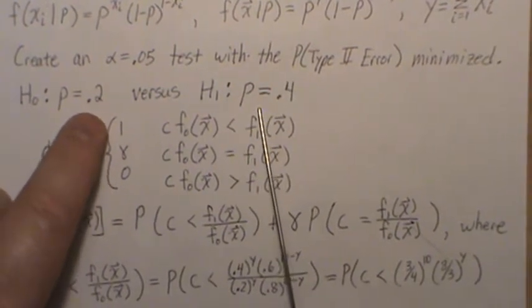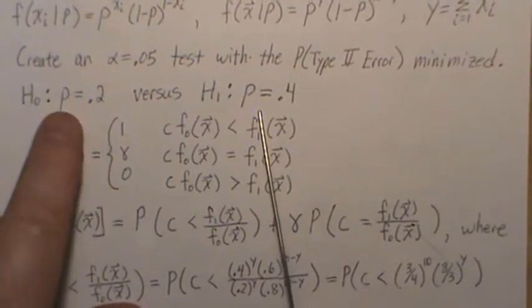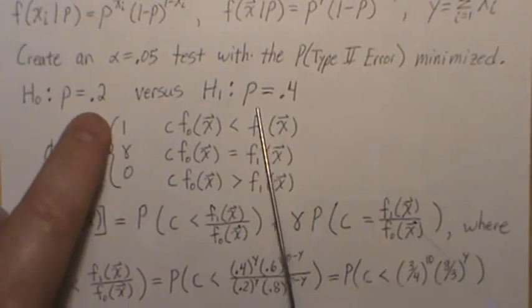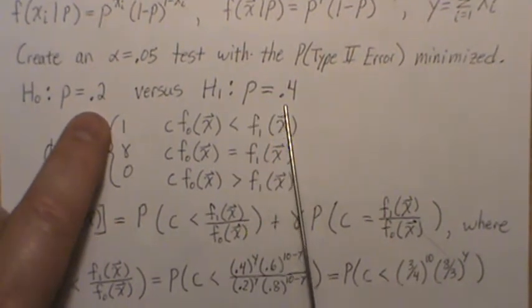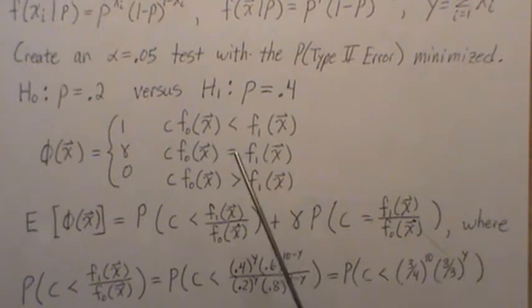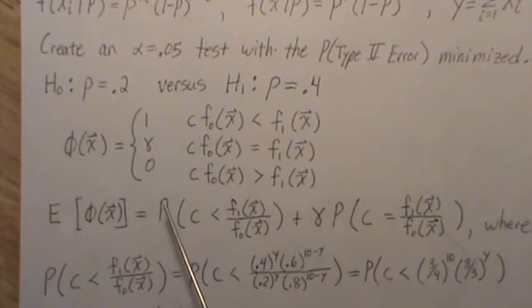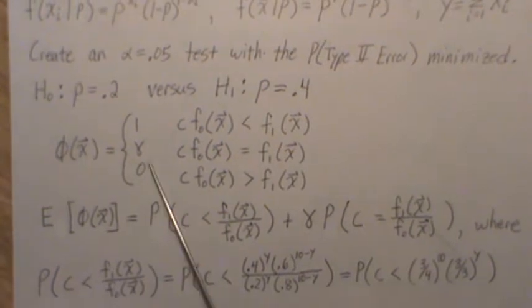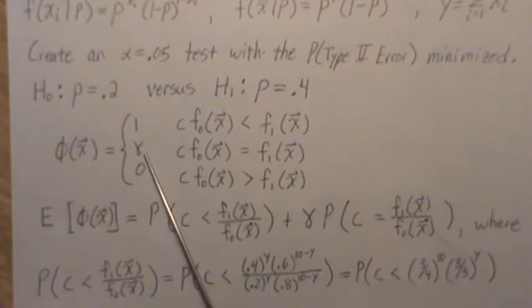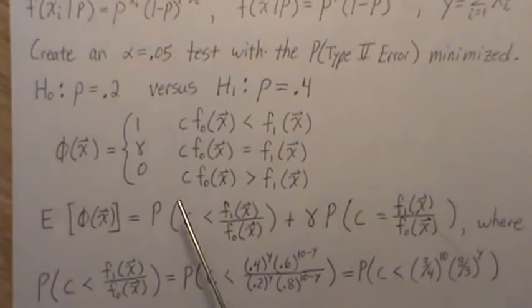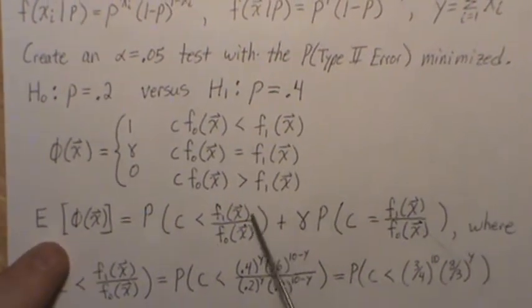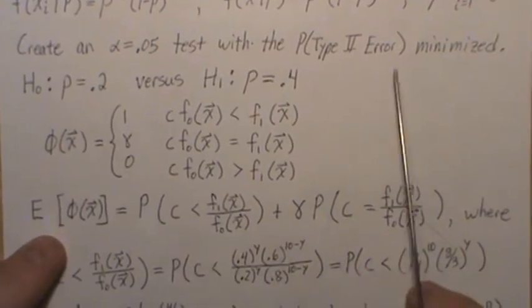And this is how we do it. According to the Neyman-Pearson lemma, we have to assume that we're interested in two points. So is p equal 0.2 or is p equal 0.4? Now we can use the Neyman-Pearson lemma, so it has to be set up in this fashion. And so we're going to have to determine gamma and c to make this test an alpha 0.05 and minimize the type 2 error.